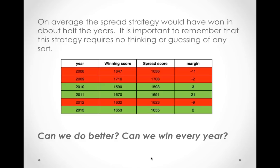Looking at a simple back-test over six years, 2008 to 2013, in three of the years the spread strategy actually won the league — nobody did better than following the spread. The red years are the years where the spread strategy lost to someone picking differently. The 2008 result is highlighted, where one person beat the spread strategy by a larger than average margin. But we want something repeatable that the computer spits out — ideally, can the computer win every year?